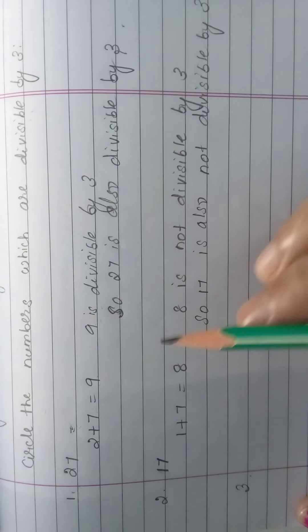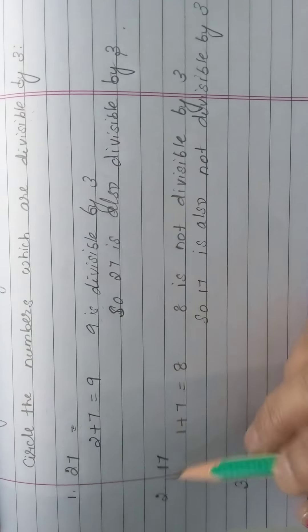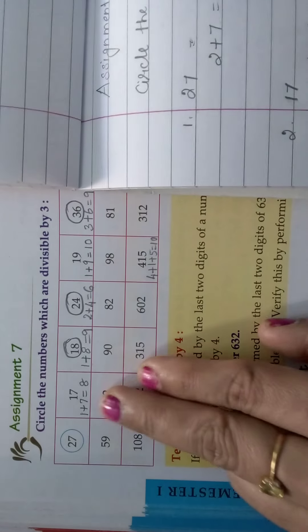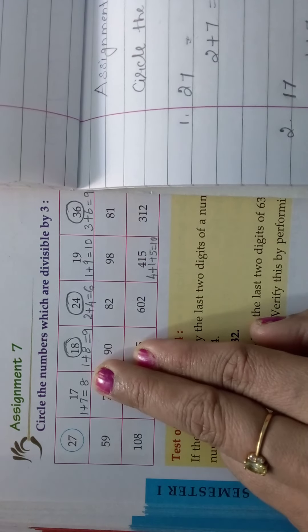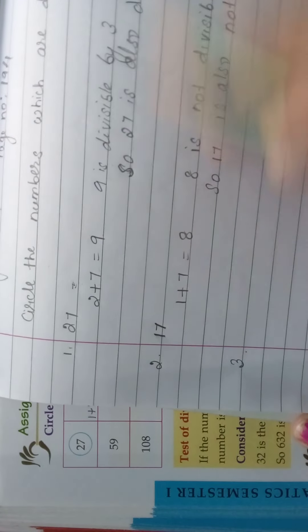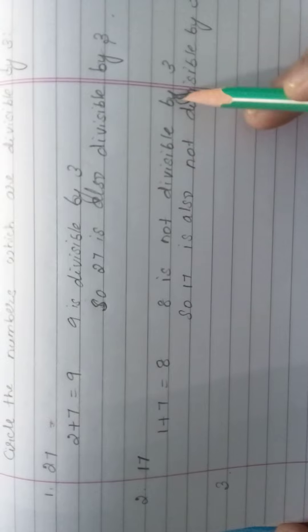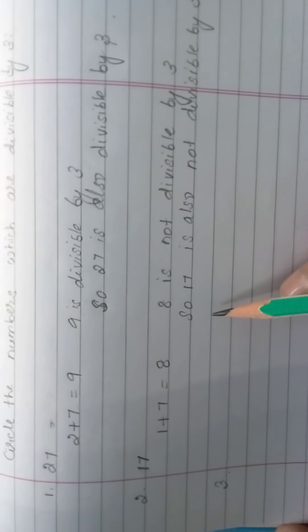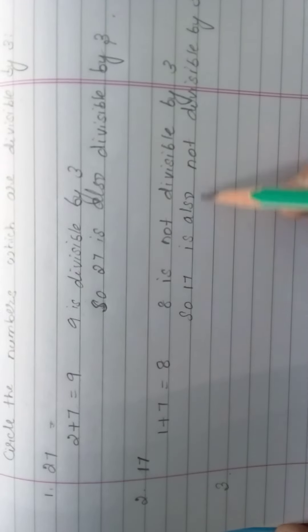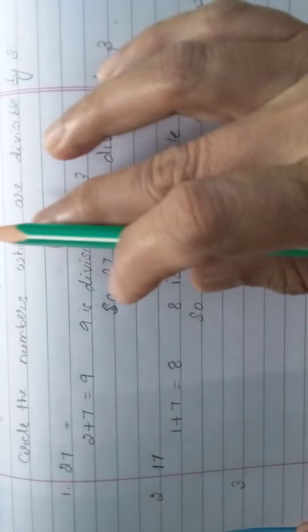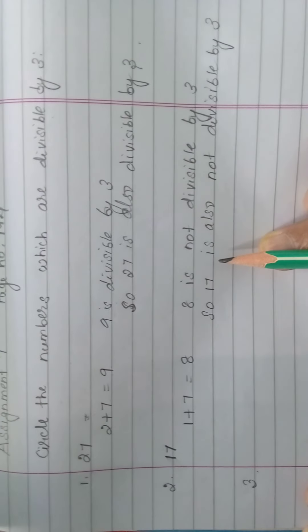Understood? In this way you should do each and every number. Next number is 17. Take it like this: 17, and add the digits — 1 plus 7 is equal to 8. 8 is not divisible by 3, so 17 is also not divisible by 3. In this way you should do it in your classwork, then it will be easy for you.